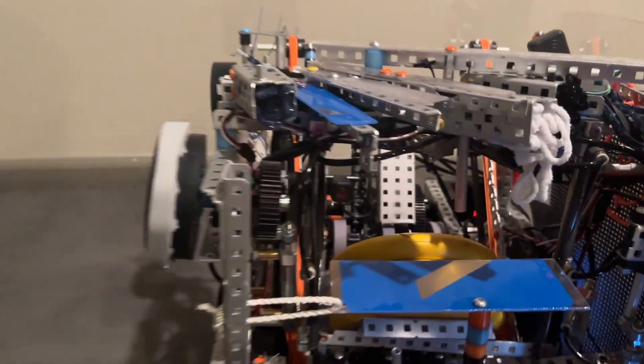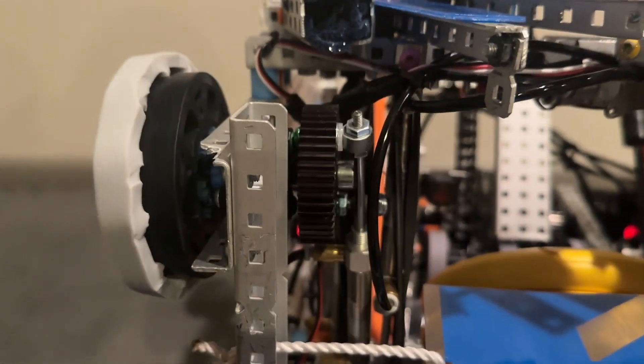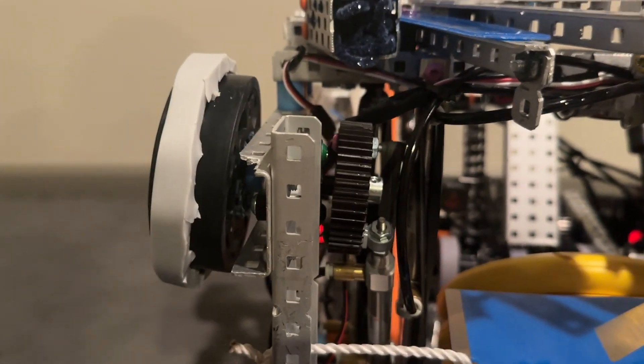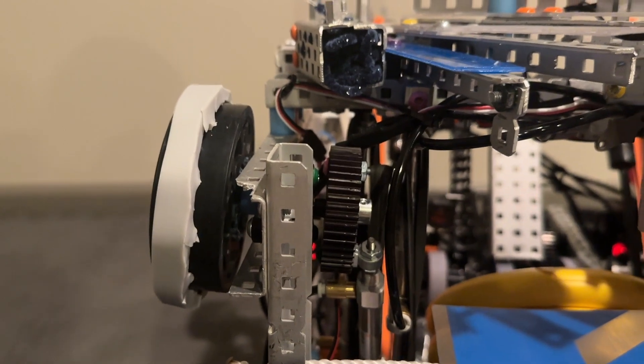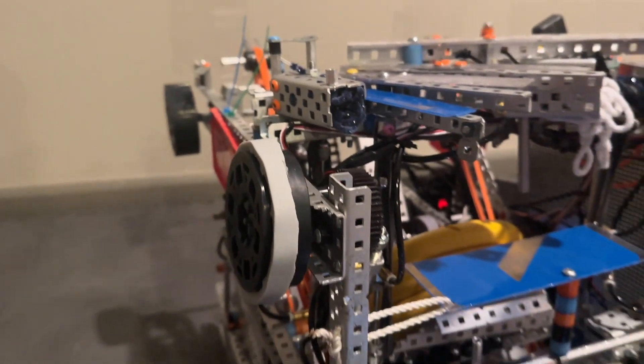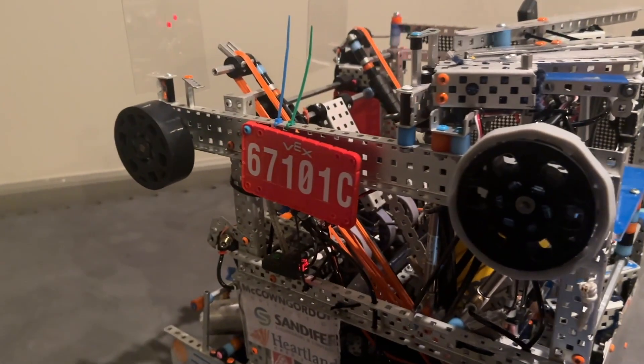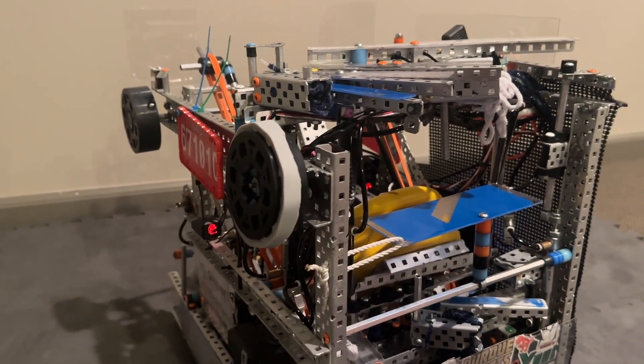That's just powered by a double acting cylinder right there and it works really well. Very fast. We mostly use it for autons so that we can back up and it also functions as a backup roller.